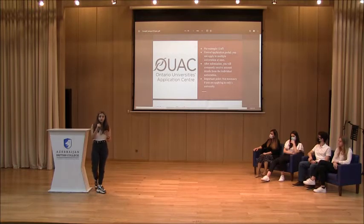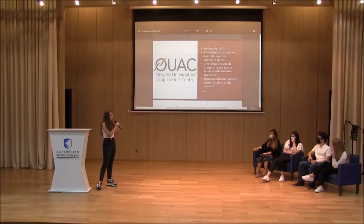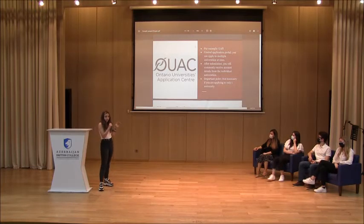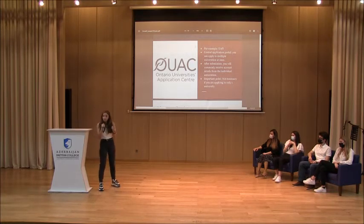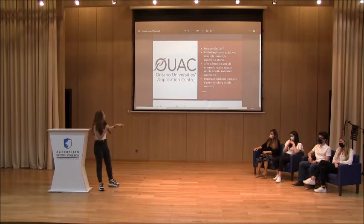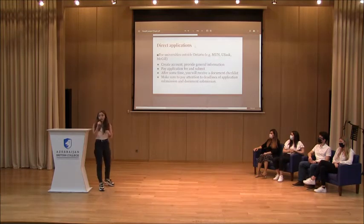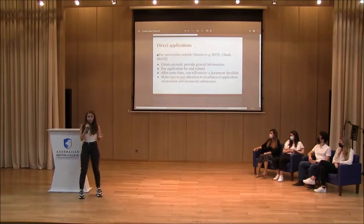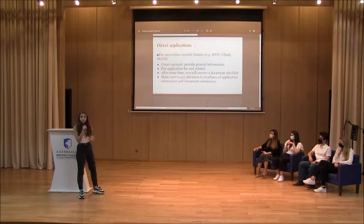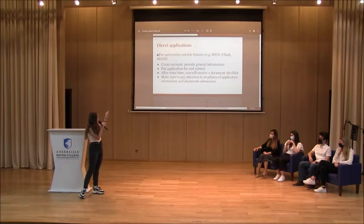There are two ways of applying to Canadian universities. If you are applying to Ontario, you will use a portal called OYAC, where you apply to more than one university — like U of T and others. You sign up, give your background information, pay for the submission, and get information for each university. If you are applying to only one university in Ontario or a university outside Ontario, you apply directly to their university website.